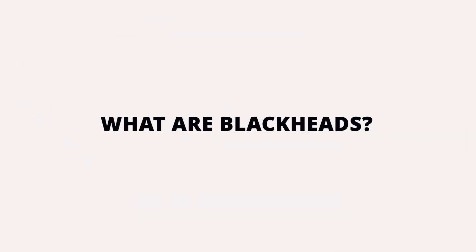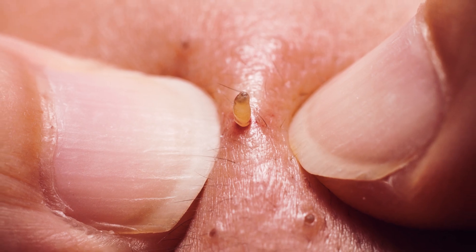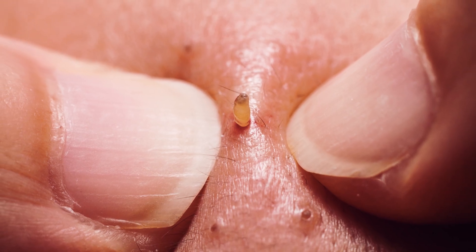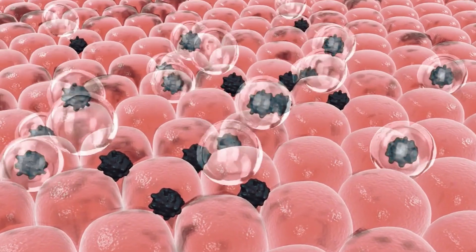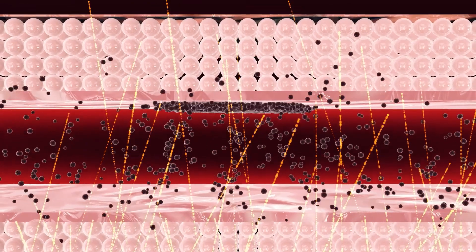First, we have blackheads, also known as open comedones. Blackheads are a type of comedone — a clogged pore — that occurs when a pore gets clogged with a mixture of excess oil and dead skin cells. When the clogged material is exposed to air, it oxidises and turns black or dark brown, hence the name blackhead. They are larger than sebaceous filaments and appear as dark or black dots, often more raised on the skin.